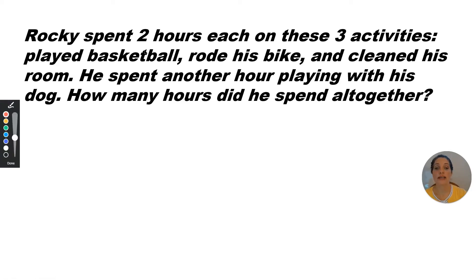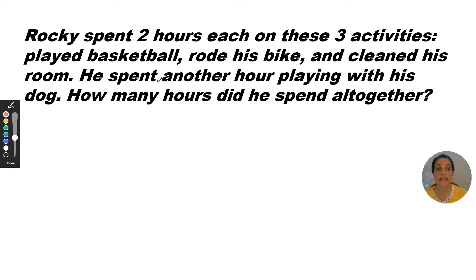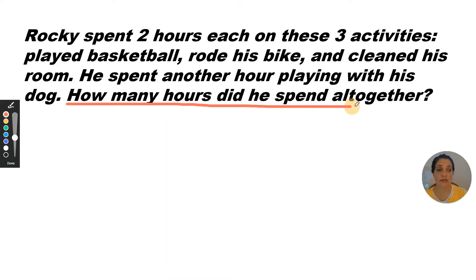Rocky spent two hours each on these three activities: basketball, bike, and room. He played basketball, he rode his bike, and cleaned his room. He spent another hour — so that would be one hour — playing with his dog. How many hours did he spend altogether?